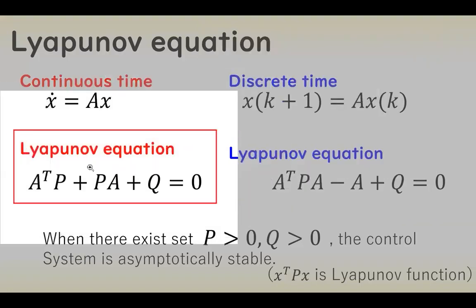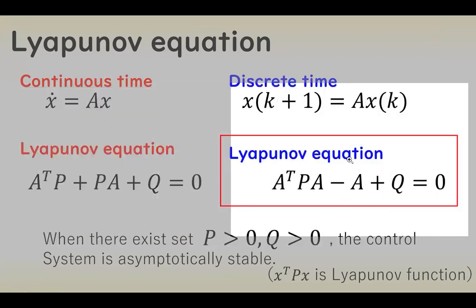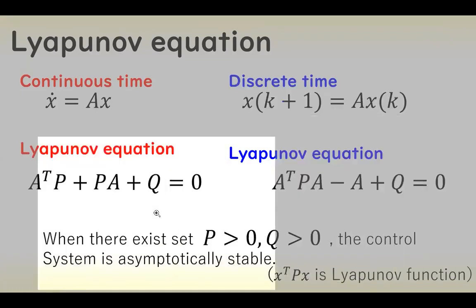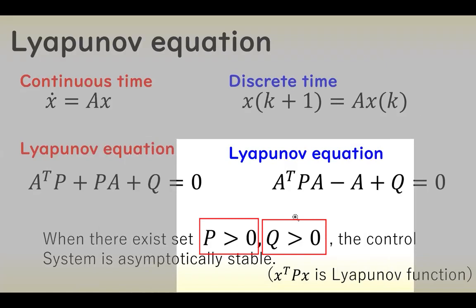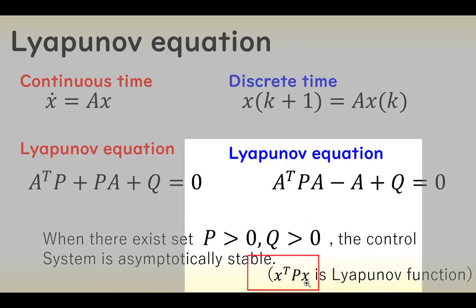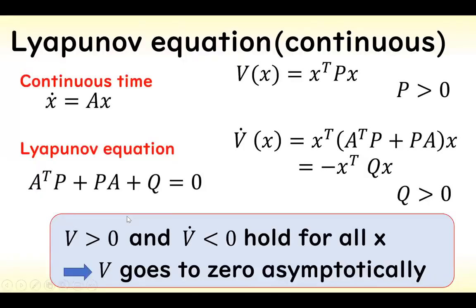In the case of the continuous-time system, the Lyapunov equation is given like this. And in the case of the discrete-time system, the Lyapunov equation is given like this. When there exists a matrix P that is positive and Q that is positive, the control system is asymptotically stable.